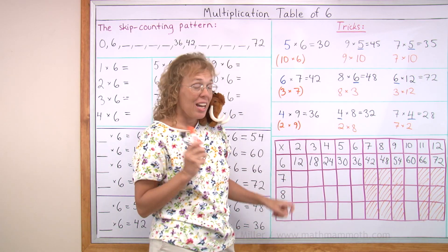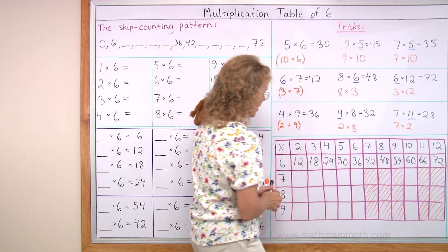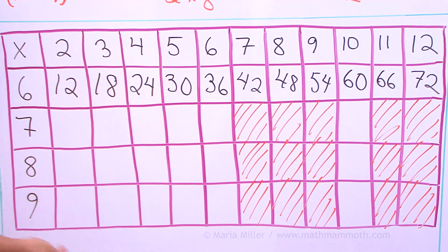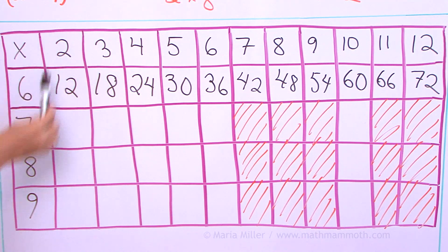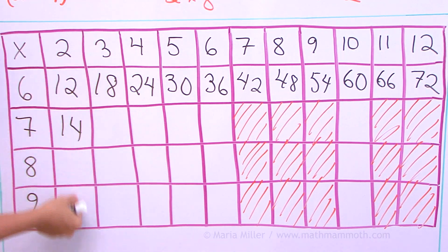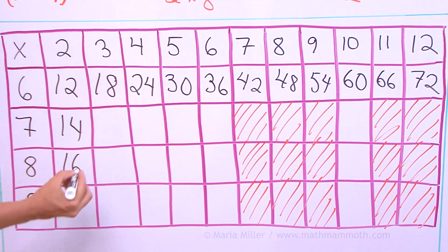Now 7s. We haven't studied yet the skip counting pattern by 7s. But we can go down this way because here I have the table of 2. So I have 2 times 6, 12. 2 times 7, 14. This way it goes by 2s. 12, 14, then 16, and then 18. Easy.